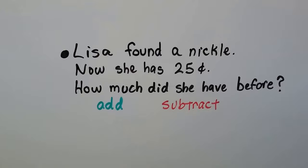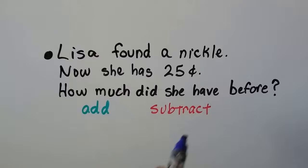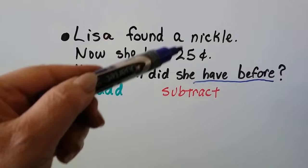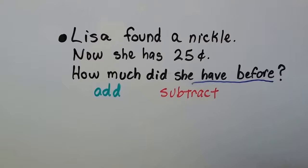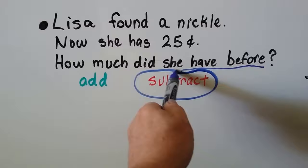Lisa found a nickel. Now she has 25 cents. How much did she have before? Would this be adding or subtracting? 'Have before' tells us it was before she found the nickel, so we need to take the nickel away from the 25 cents to find out what she had before she found it. She found the nickel and now has 25 cents — if we take that nickel away, we'll know what she had before. So that's subtraction.